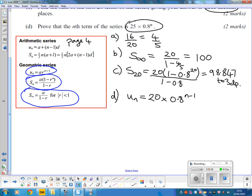So what we can do is use indices rules to split this up. Thinking backwards, that's the same as 0.8 to the N times 0.8 to the negative 1.